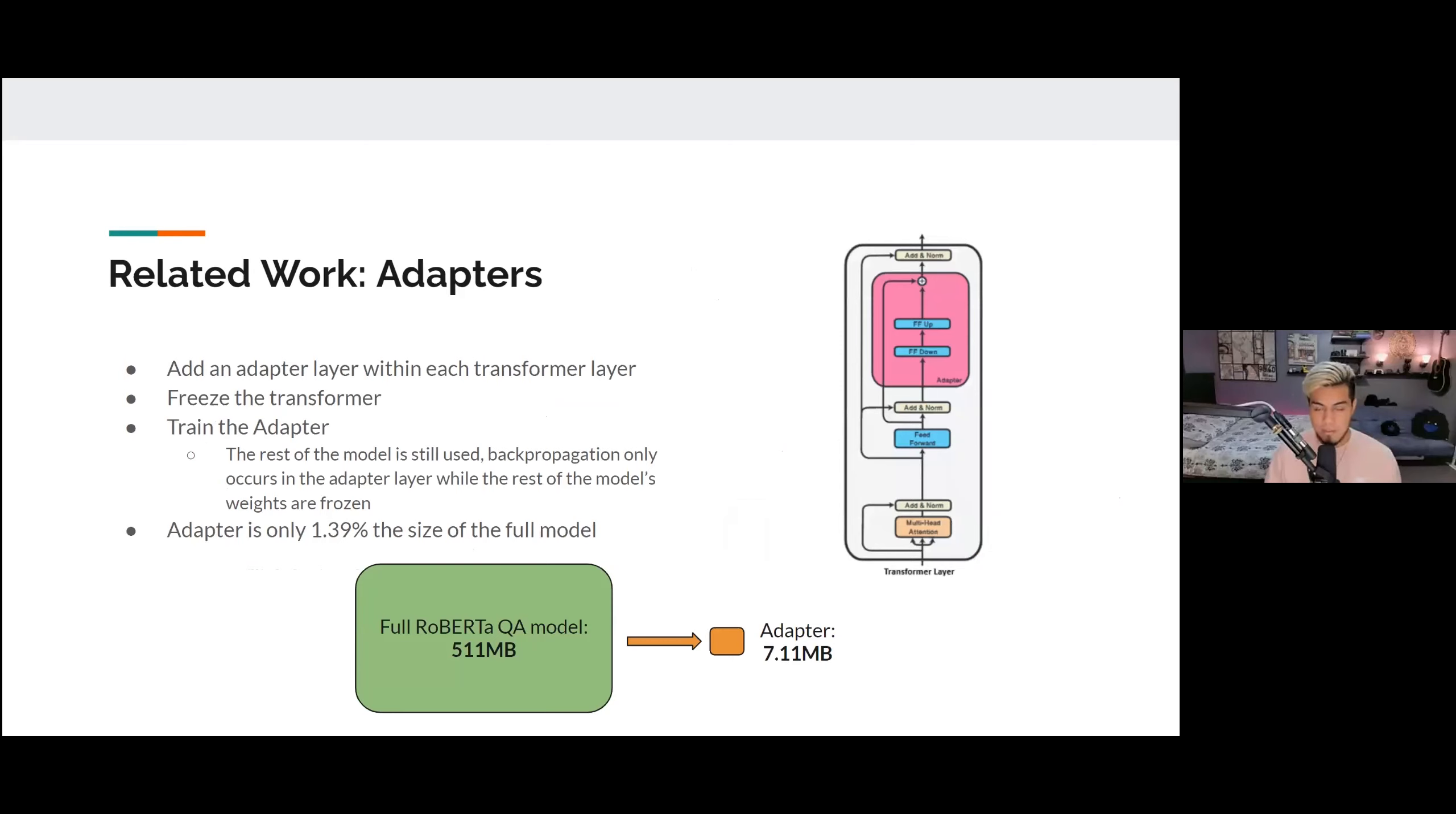A different method that we checked out were adapters. So adapters are a parameter efficient way to fine tune a model if you have a pre-trained model already. If you have a pre-trained model that's in relative domain of your task, you basically take the pre-trained model, insert these adapter layers into each transformer layer, about two adapter layers per each transformer layer, and then you freeze the rest of the model and only train on the adapter layers. This allows it to be extremely parameter efficient. In our case, we use about less than 2% of the full model's parameters.